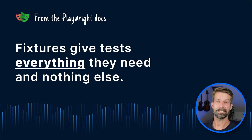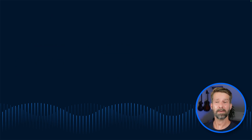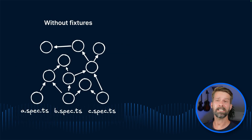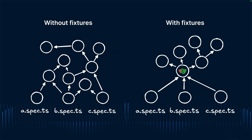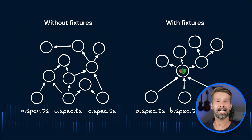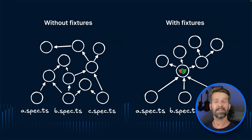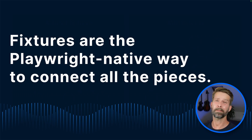If you need any kind of setup or teardown steps, you can use fixtures to define them in a single place in your base file to clean up all your spec files. The Playwright docs state very clearly: fixtures give tests everything they need and nothing else. By using fixtures, you're not reinventing the wheel with imports and exports all over the place — you use the architecture Playwright comes with, making your code more readable, more maintainable, and easier to navigate instead of hunting down imports across your entire test codebase.